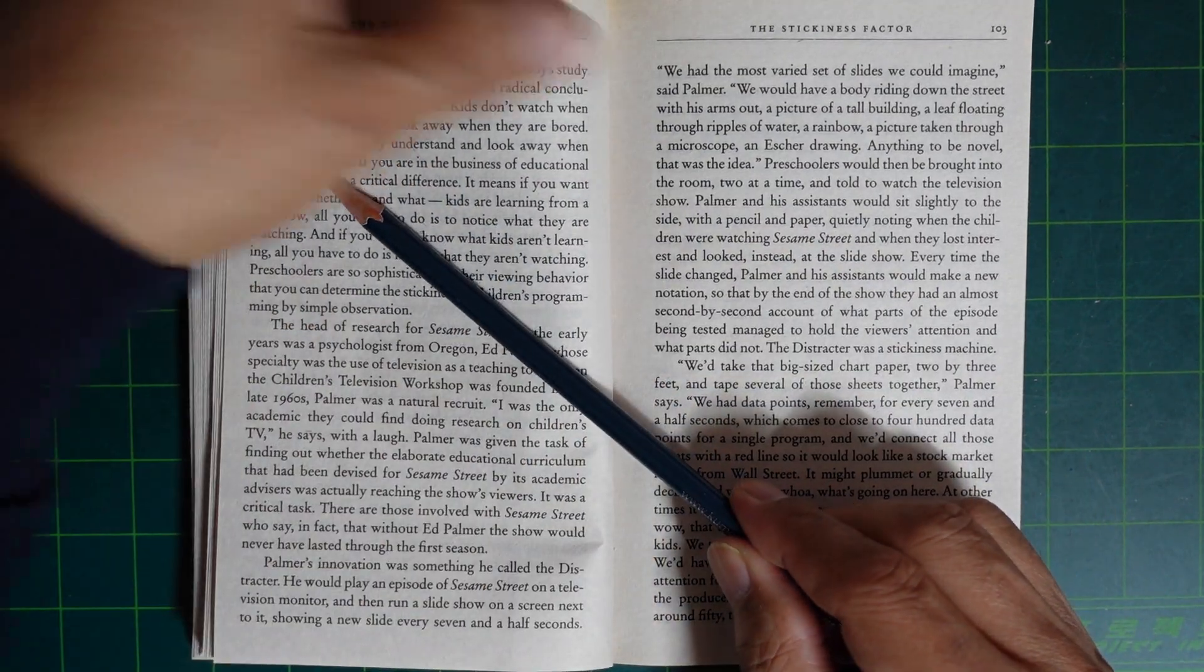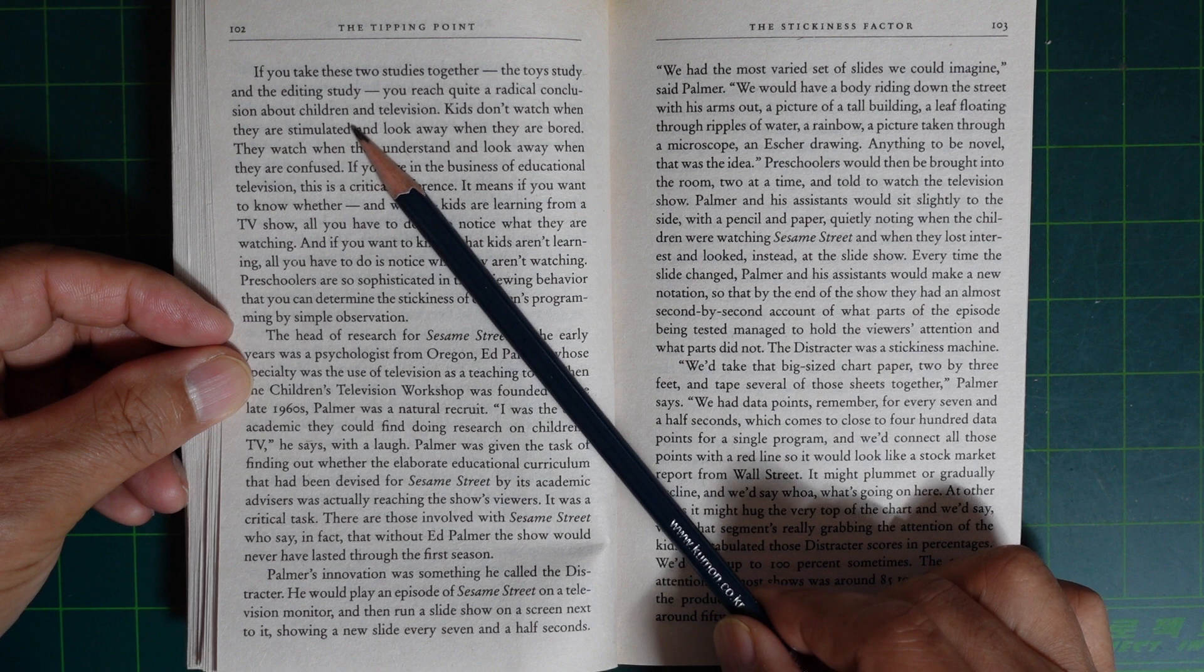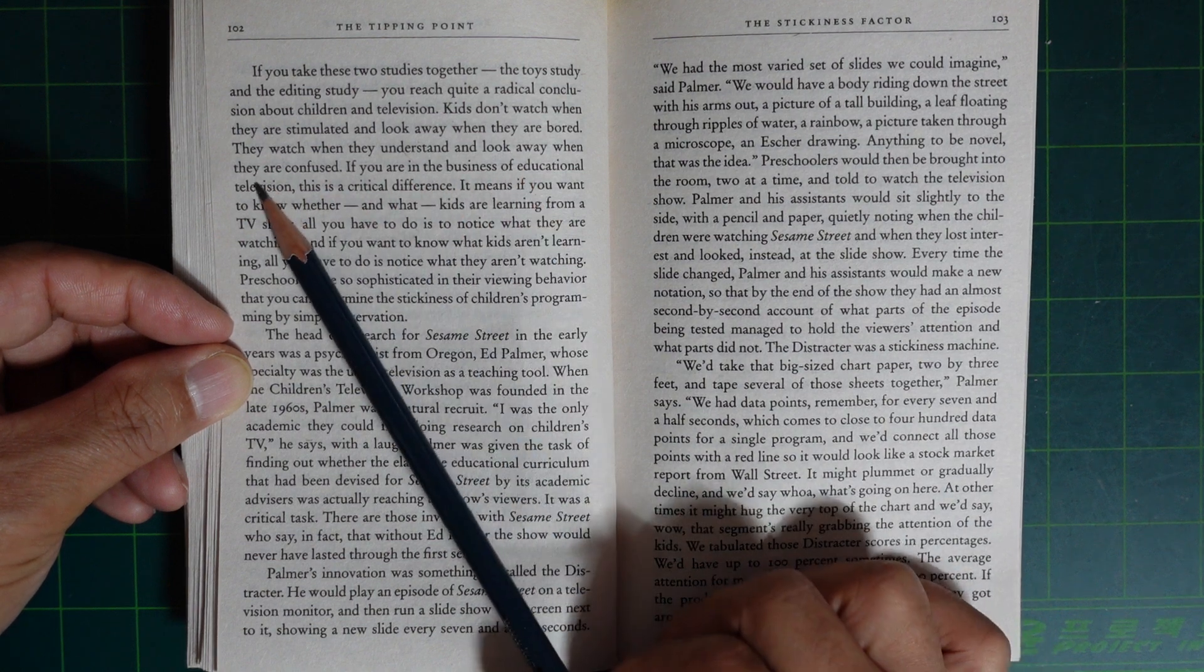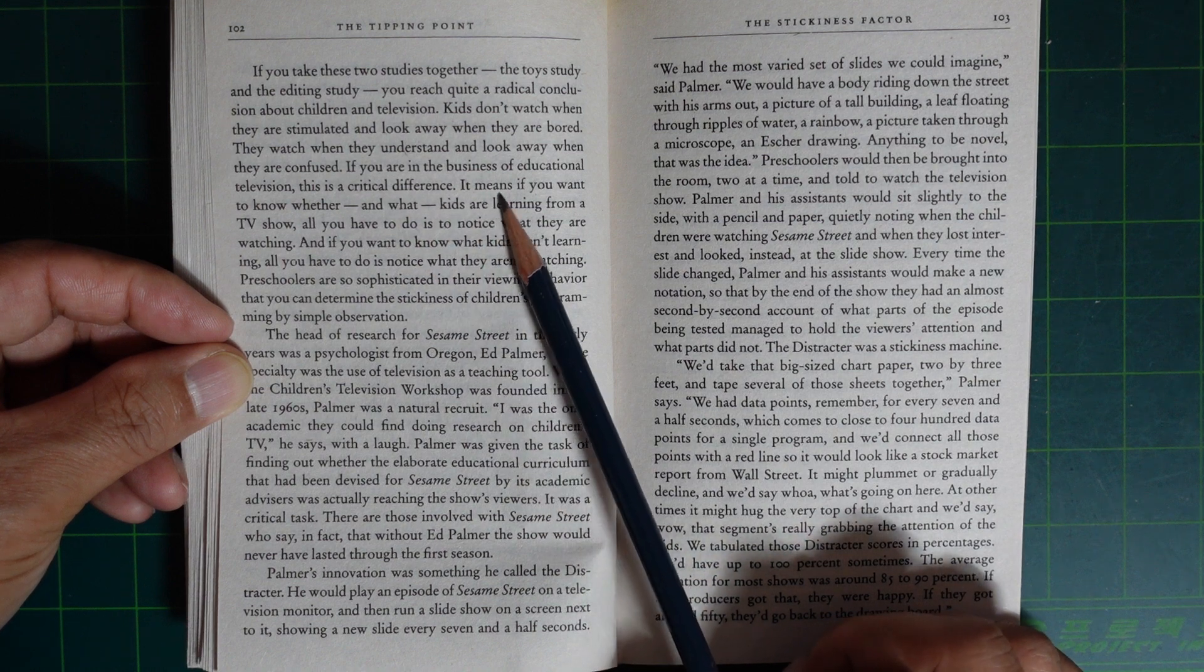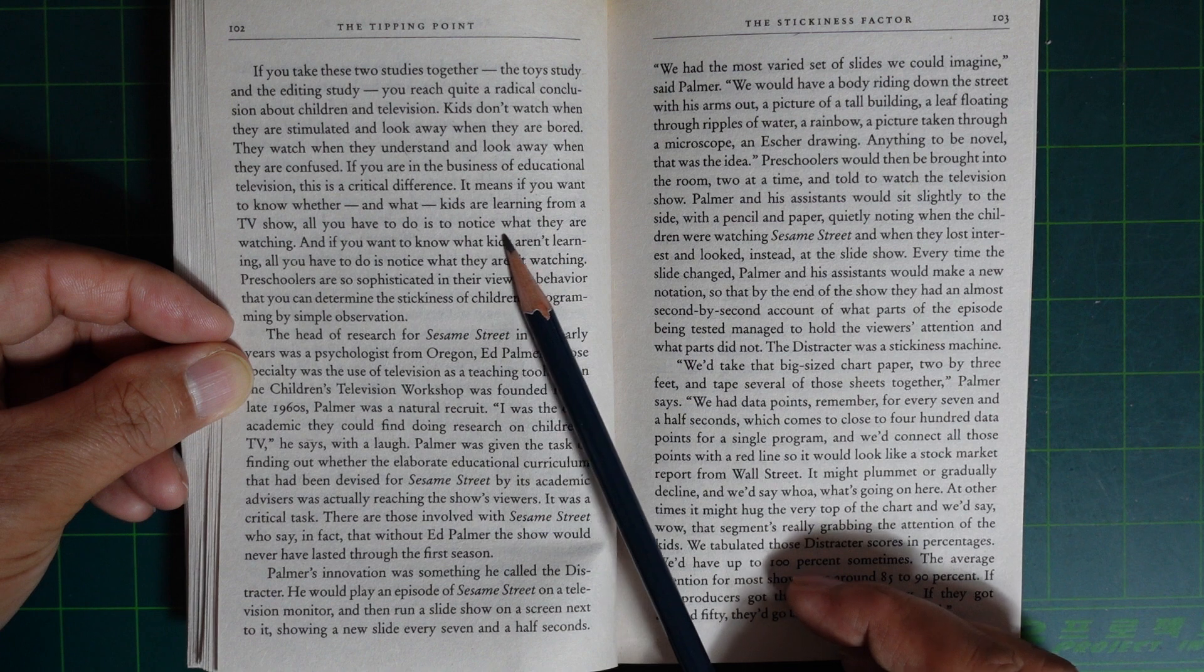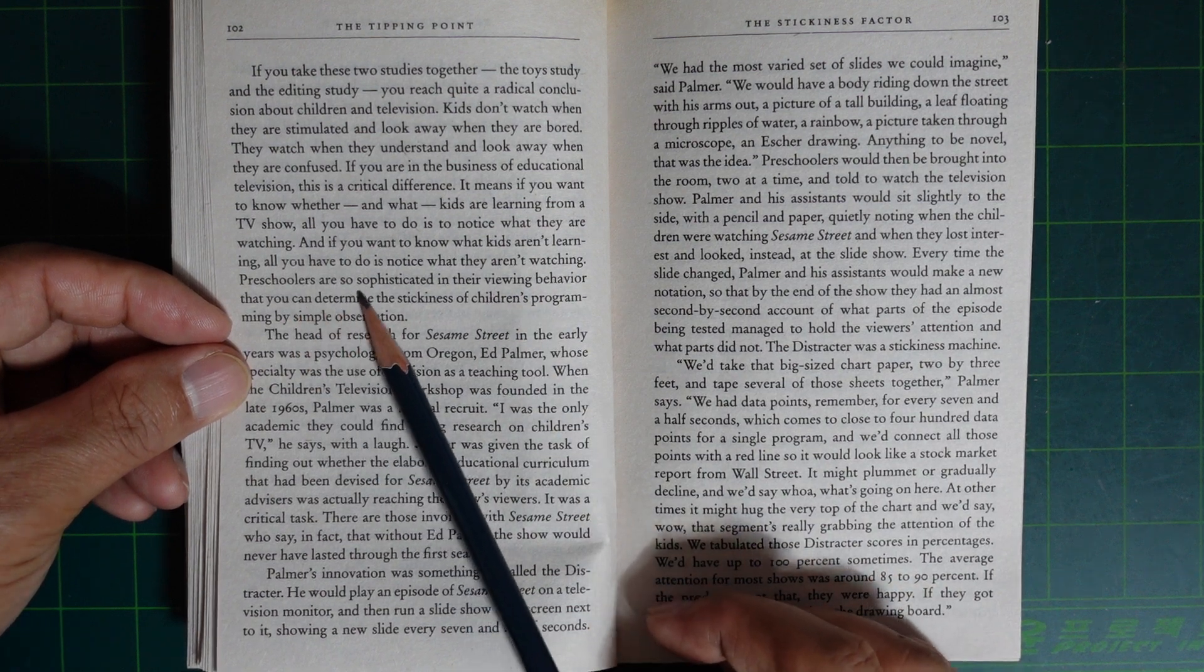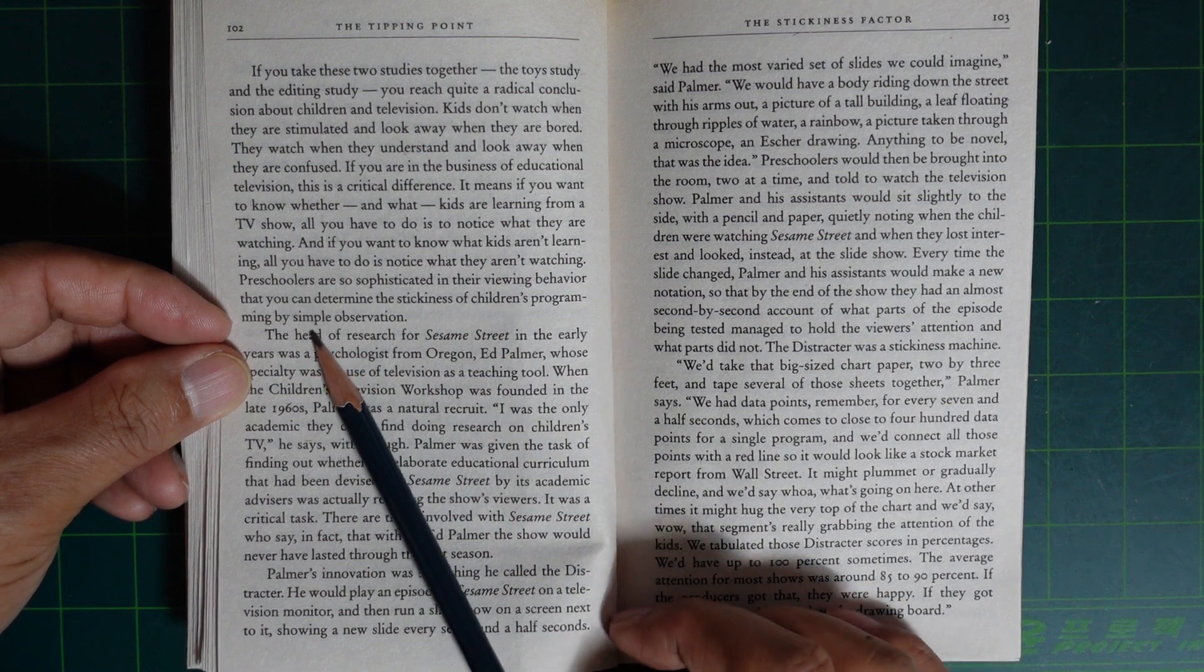If you take these two studies together - the toys study and the editing study - you reach quite a radical conclusion about children and television. Kids don't watch when they're stimulated and look away when they're bored. They watch when they understand and look away when they're confused. If you're in the business of educational television, this is a critical difference. It means if you want to know whether and what kids are learning from a TV show, all you have to do is notice what they're watching.